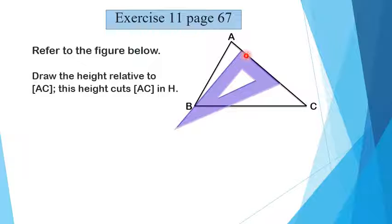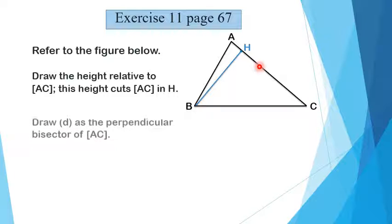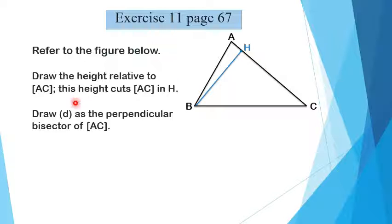By using our set square, we draw the height. This height cuts AC in H. The point of intersection of the height and the segment AC is point H. It's also called the foot of the perpendicular.